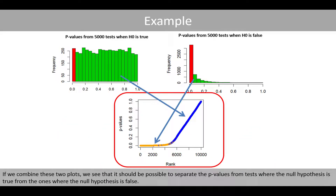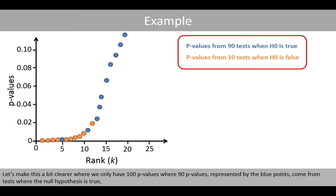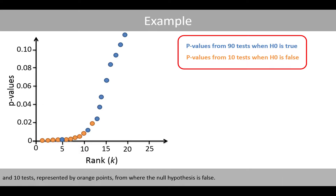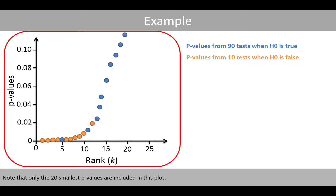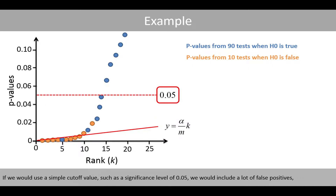If we combine these two plots, we see that it should be possible to separate the p-values from the tests where the null hypothesis is true from the ones where the null hypothesis is false. This is exactly what the Benjamini-Hochberg method does — it places a cutoff line between the two different shapes of the curve. To make this clearer with a smaller example of 100 p-values, where 90 blue points come from tests where the null hypothesis is true and 10 orange points from where it is false, the Benjamini-Hochberg cutoff line makes a good job separating them. Using a simple cutoff value such as 0.05 would include many more false positives.